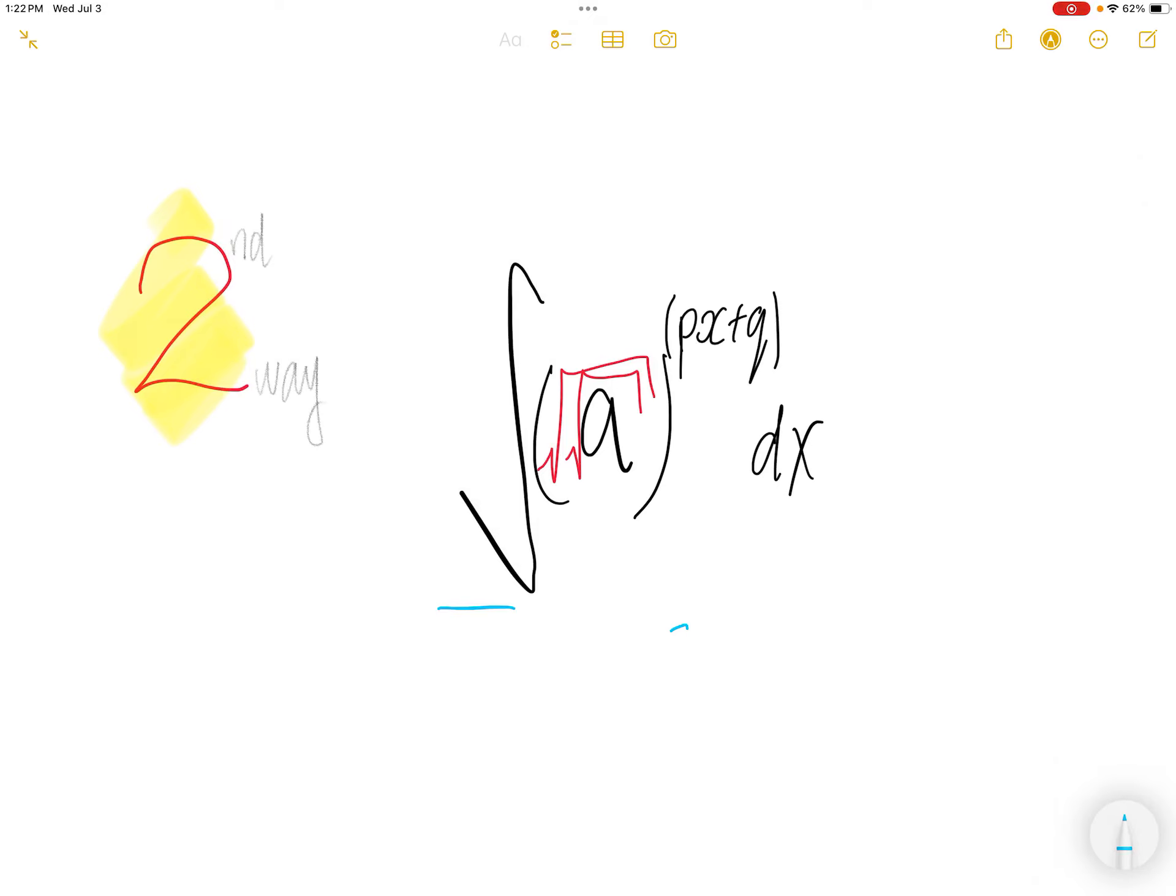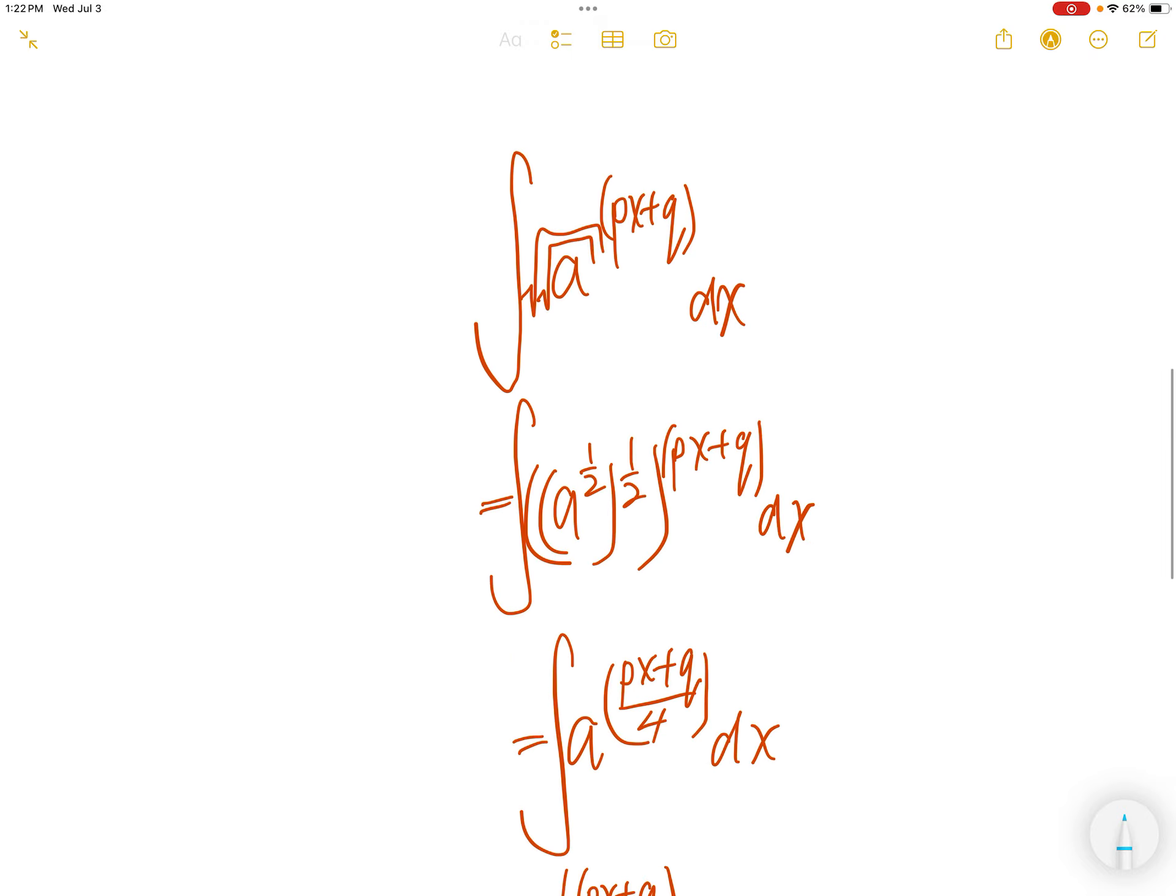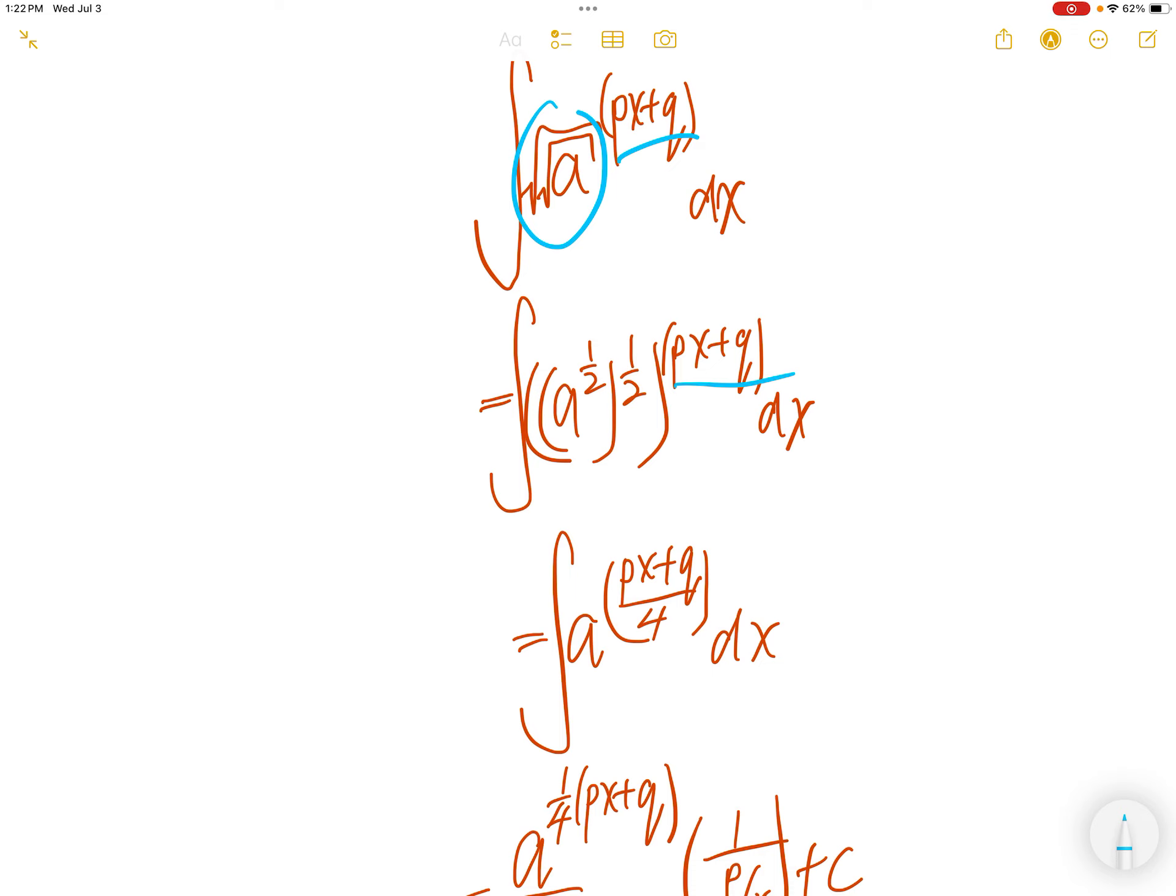The integral is √(√(a^(px+q))), where a, p, and q are all constants. We're going to write √(√a) as a to the power of 1/2 to the power of 1/2. From the property of exponentiation, we can multiply the exponents.